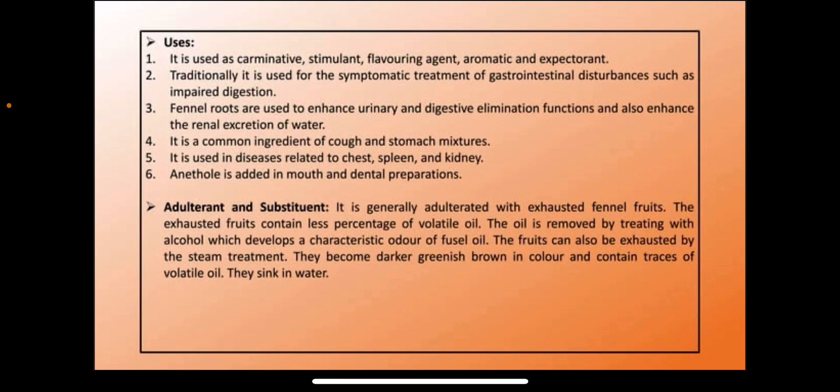Uses of fennel: it is used as a carminative, stimulant, flavoring agent, aromatic and expectorant. It is also used for symptomatic treatment of GIT disturbances like impaired digestion. Fennel root enhances urinary and digestive elimination function and increases excretion of water. It is used as an ingredient in stomach and cough mixtures, helps relieve chest pain, spleen and kidney related problems, and anethole is used as a mouth freshener and in dental preparations.